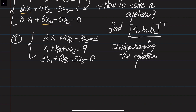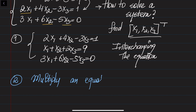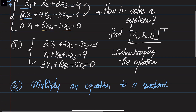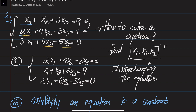Another operation is multiplying an equation by a constant. For example, I would be interested in multiplying the first equation by 2. The reason I would do this is to equalize the coefficient of x1 in the first and second equations, so that I can eliminate one of the x1s. So we can multiply the first equation by 2.